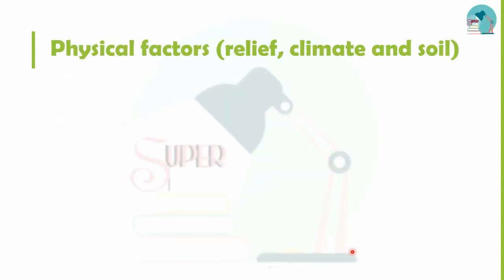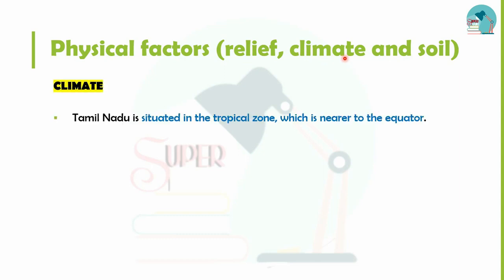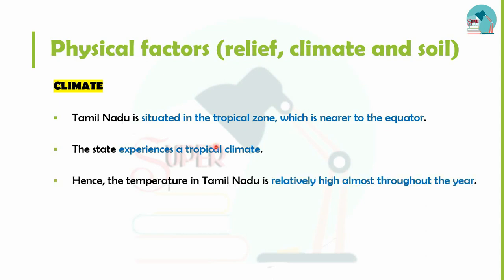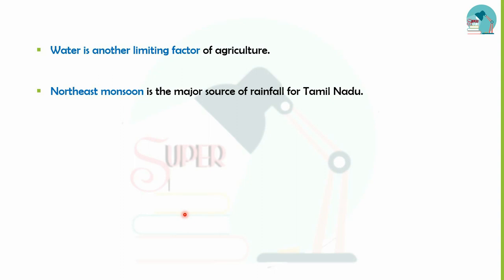Physical factors include relief, climate, and soil. In Tamil Nadu, there is a tropical zone near the equator, so we experience tropical climate with high temperatures throughout the year, which means we cultivate tropical crops. Water is also a key climate factor in agriculture.